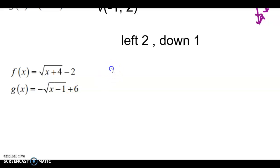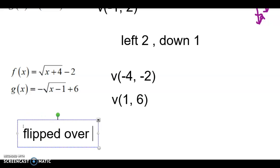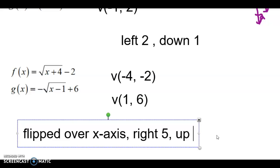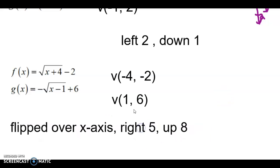Next two, put in the vertex and then compare them. So for f of x, the vertex is negative 4, negative 2. For g of x, the vertex is 1, 6. Also notice we have a negative sign in front. So that's going to flip it over the x-axis. So we can start with that. We can say it's flipped over the x-axis. And then we're at negative 4 on x and we go to positive 1. So to go from negative 4 to positive 1, we are going to the right five places. We're at negative 2. We're going up to 6. We're going up 8. There's all your transformations.